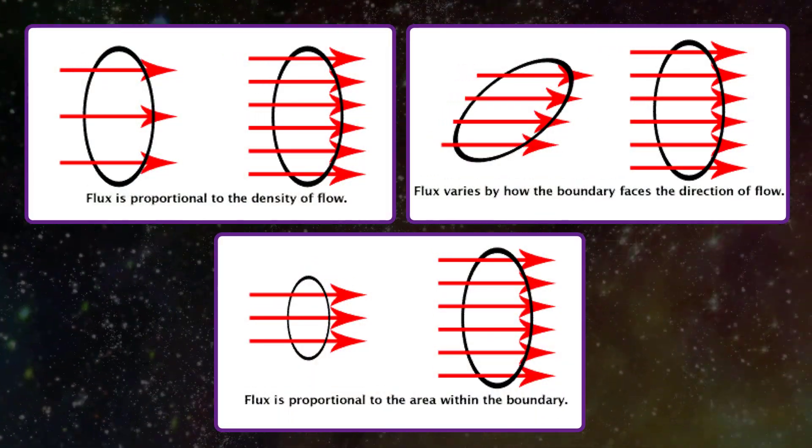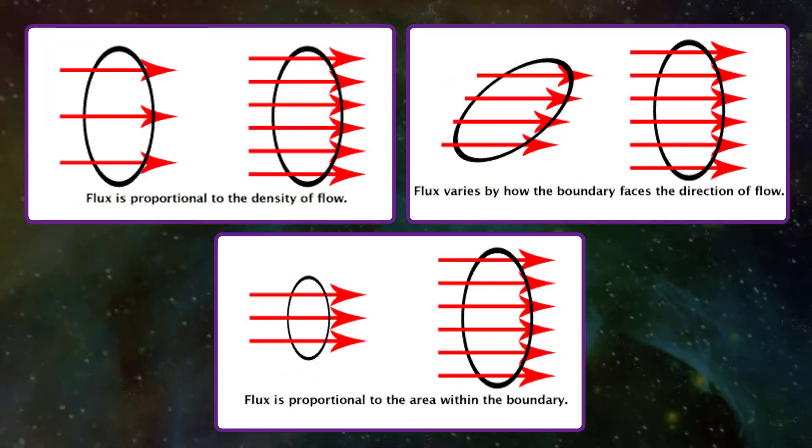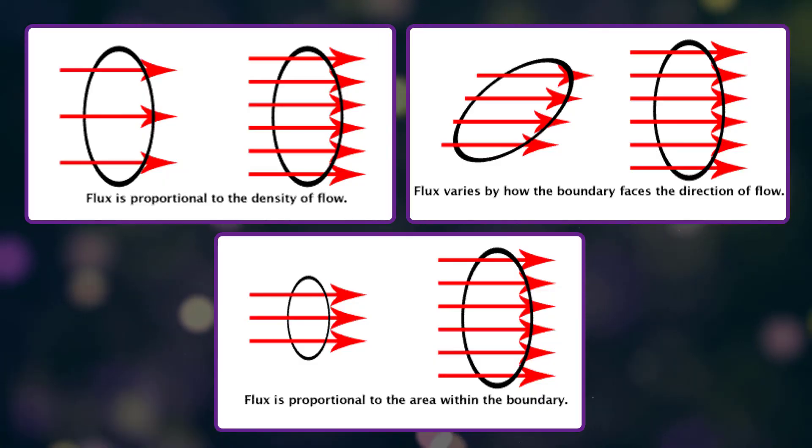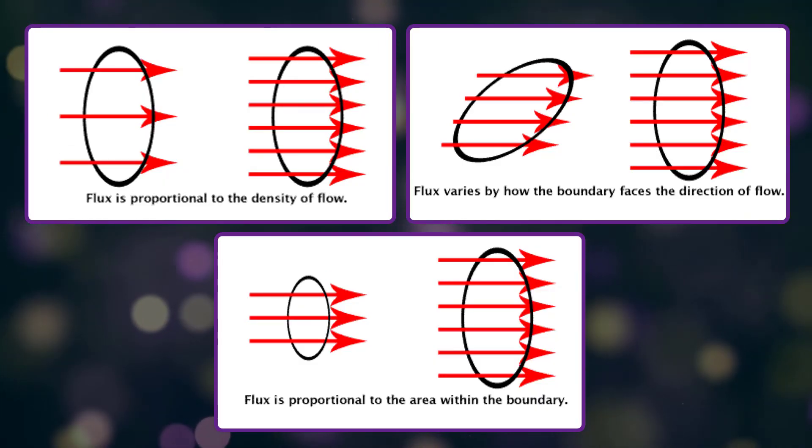Magnetic flux represents the number of lines passing through the imagined plane in the field. Flux depends on the orientation of the plane in the field.